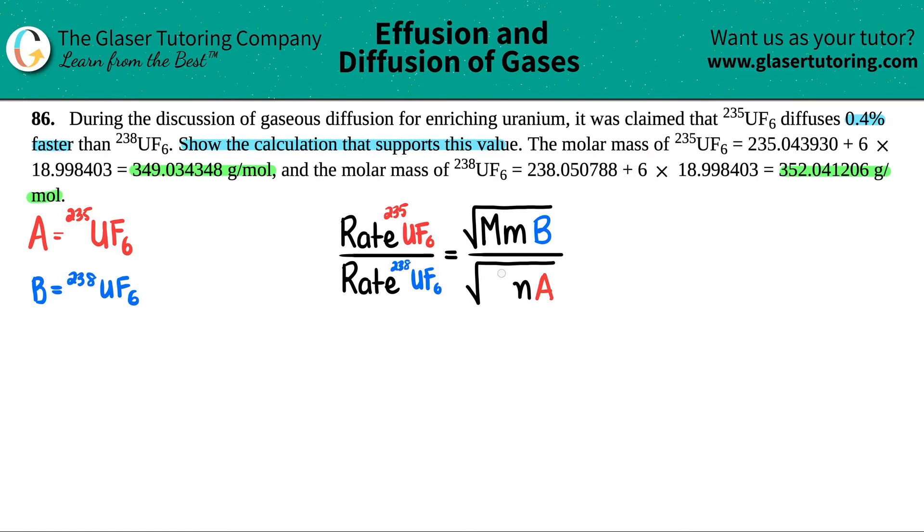So let's see, if I just erase the bottom one, remember this one is the red one, 235UF6. They say the molar mass of the 235 one was this amount, so 349.034348. The hardest part is making sure that I have all the right numbers in the right places. Sometimes my eyes, they trick me. 349.034348. I think I got it.